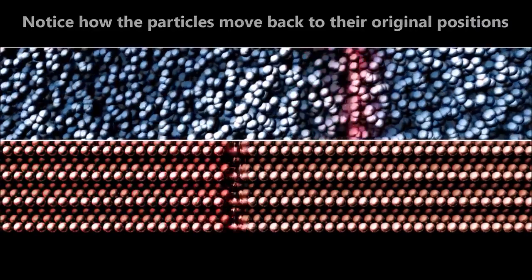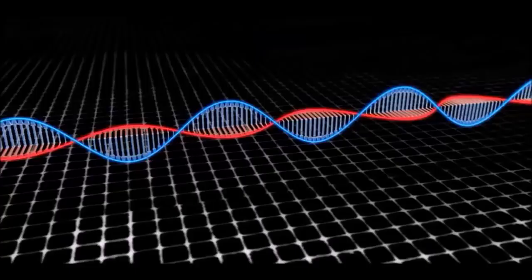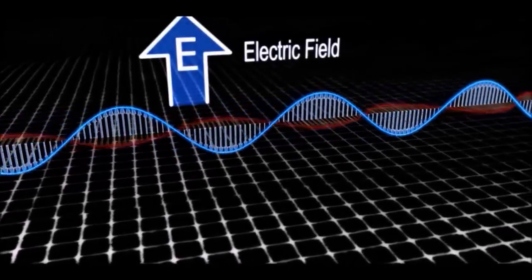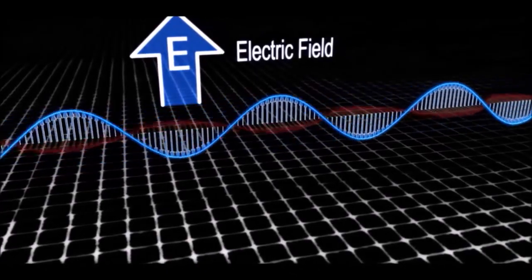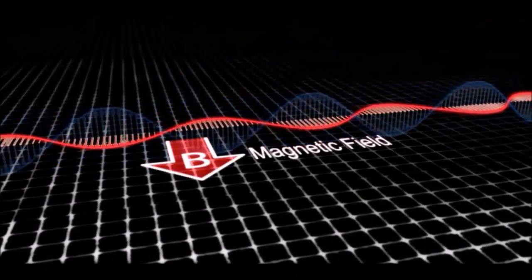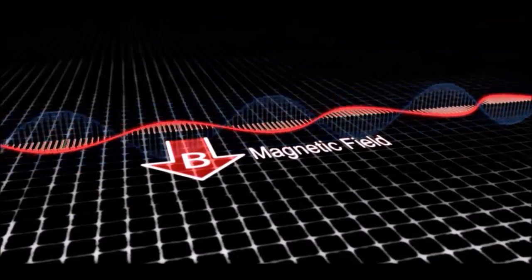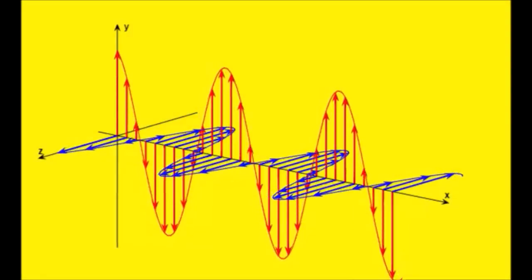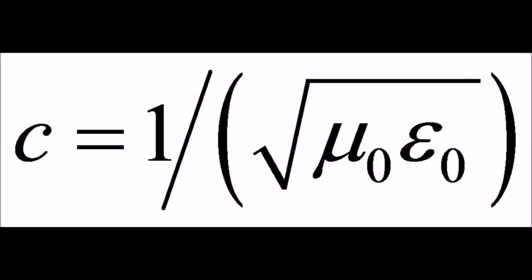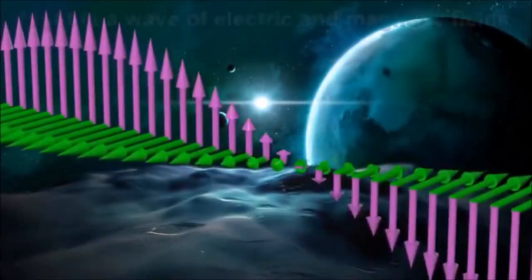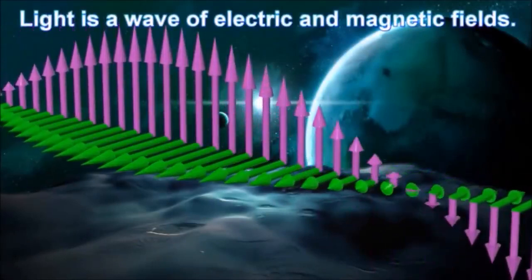So what happens when you take an electric charge and start to shake it back and forth, analogously to the way this boy is shaking the string? The electric field surrounding the charge will start to oscillate. As a result of this change in the electric field, an oscillating magnetic field will be generated, which in turn will create an oscillating electric field, and on and on it will go. The result is an electromagnetic wave. According to Maxwell's equations, the speed with which an electromagnetic wave travels is equal to the speed of light. This led him to conclude that light is a type of electromagnetic wave.